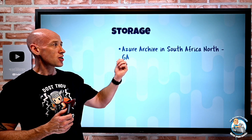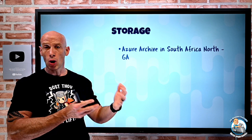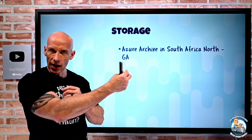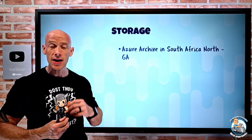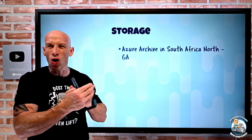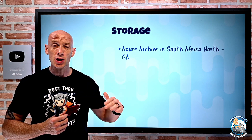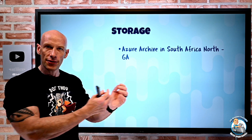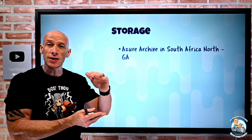On the storage side, Azure Archive tier is now available in South Africa North. For blob storage, we normally have hot and cool tiers — always available, with cool offering lower capacity cost but higher transaction costs for less-frequent access. Archive is much cheaper but not immediately available; you have to rehydrate it into cool or hot to interact with it, and there's a delay to do that. Now that Archive tier is available in South Africa North.